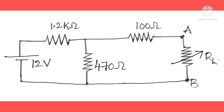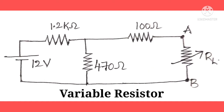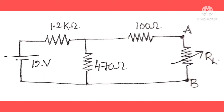If you observe, in between the terminals A and B you have a load resistor. With the help of maximum power transfer theorem we need to check when this load resistor will get the maximum power from the source. According to the statement of maximum power transfer theorem, the load resistor will obtain maximum power when it is equal to the Thevenin resistance.